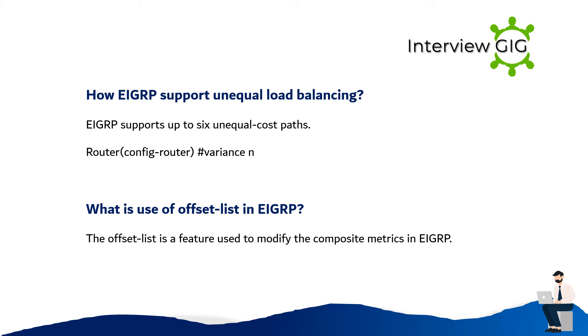What is the use of an offset list in EIGRP? The offset list is a feature used to modify the composite metrics in EIGRP.